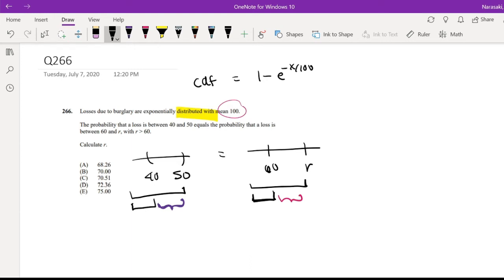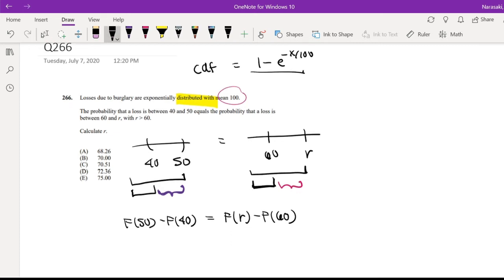And we're trying to find R. So this is equal to, again, the CDF of 50 minus the CDF of 40 is equal to the CDF of R minus the CDF of 60. Okay, so then again, the CDF formula, I just wrote it up here.